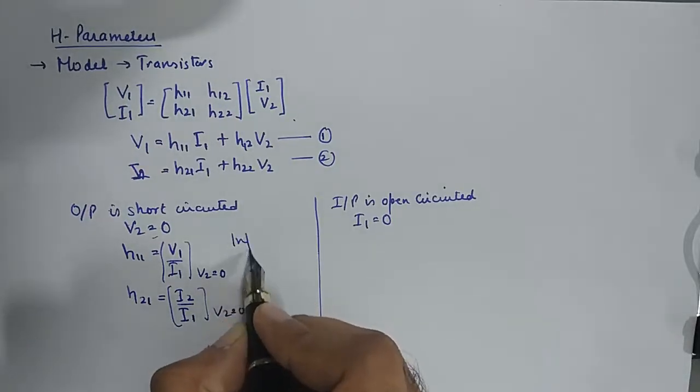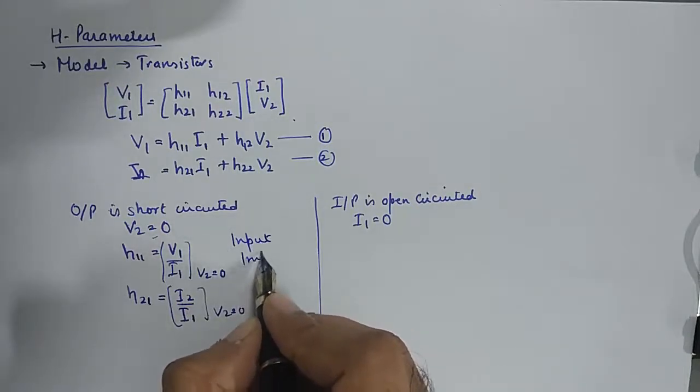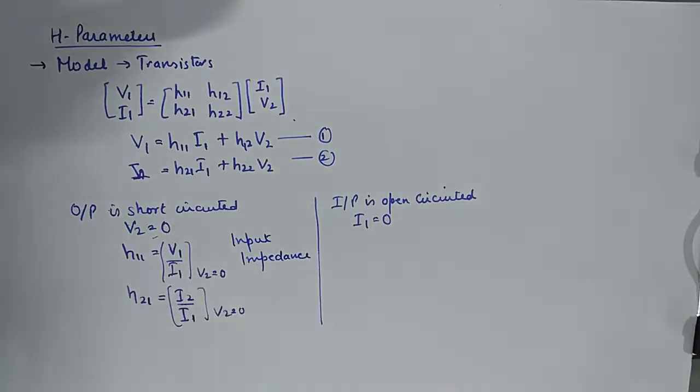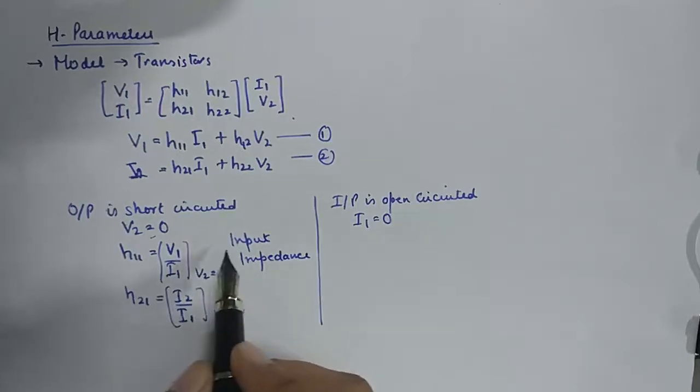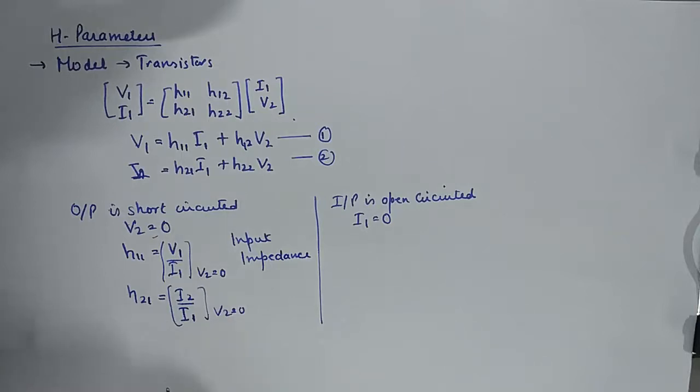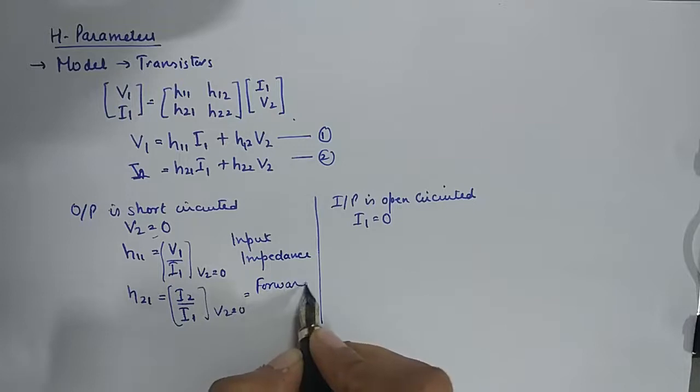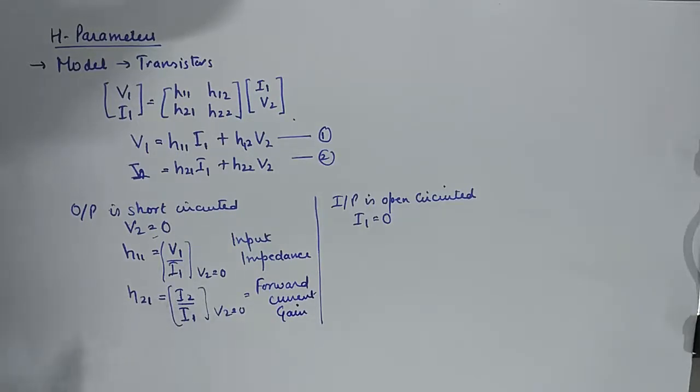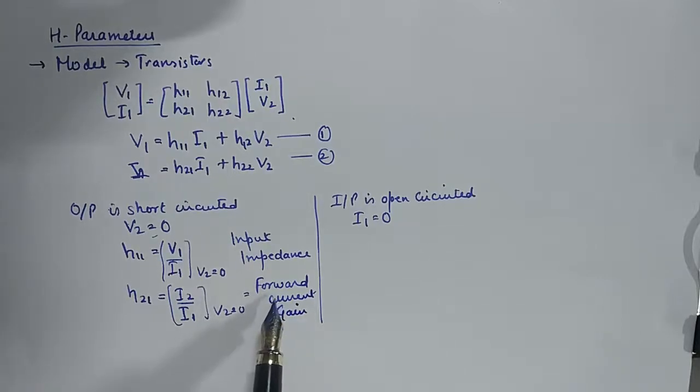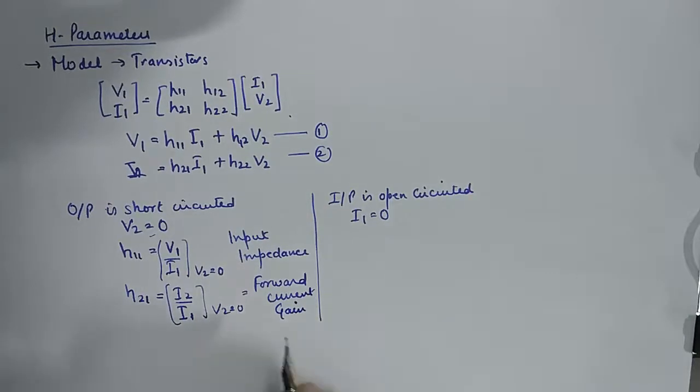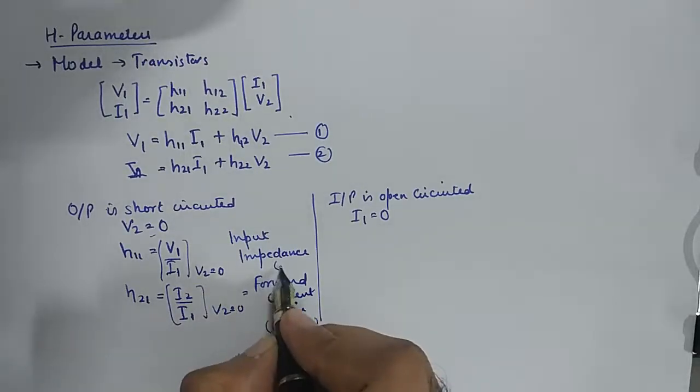And h11 is known as input impedance. This is a very important parameter in transistor study. Input impedance for any two-port network, if you find the value of V1 upon I1, this becomes h11. We know that the ratio of voltage upon current is impedance. But what kind of an impedance is this? This is input impedance because port 1 is taken to be as an input port. And h21 is forward current gain. Please understand this is a ratio of two currents. And if you talk about the current at the output to the current at the input, that boils out to be forward current gain. It's a unitless quantity, of course. And this is expressed in Ohms.